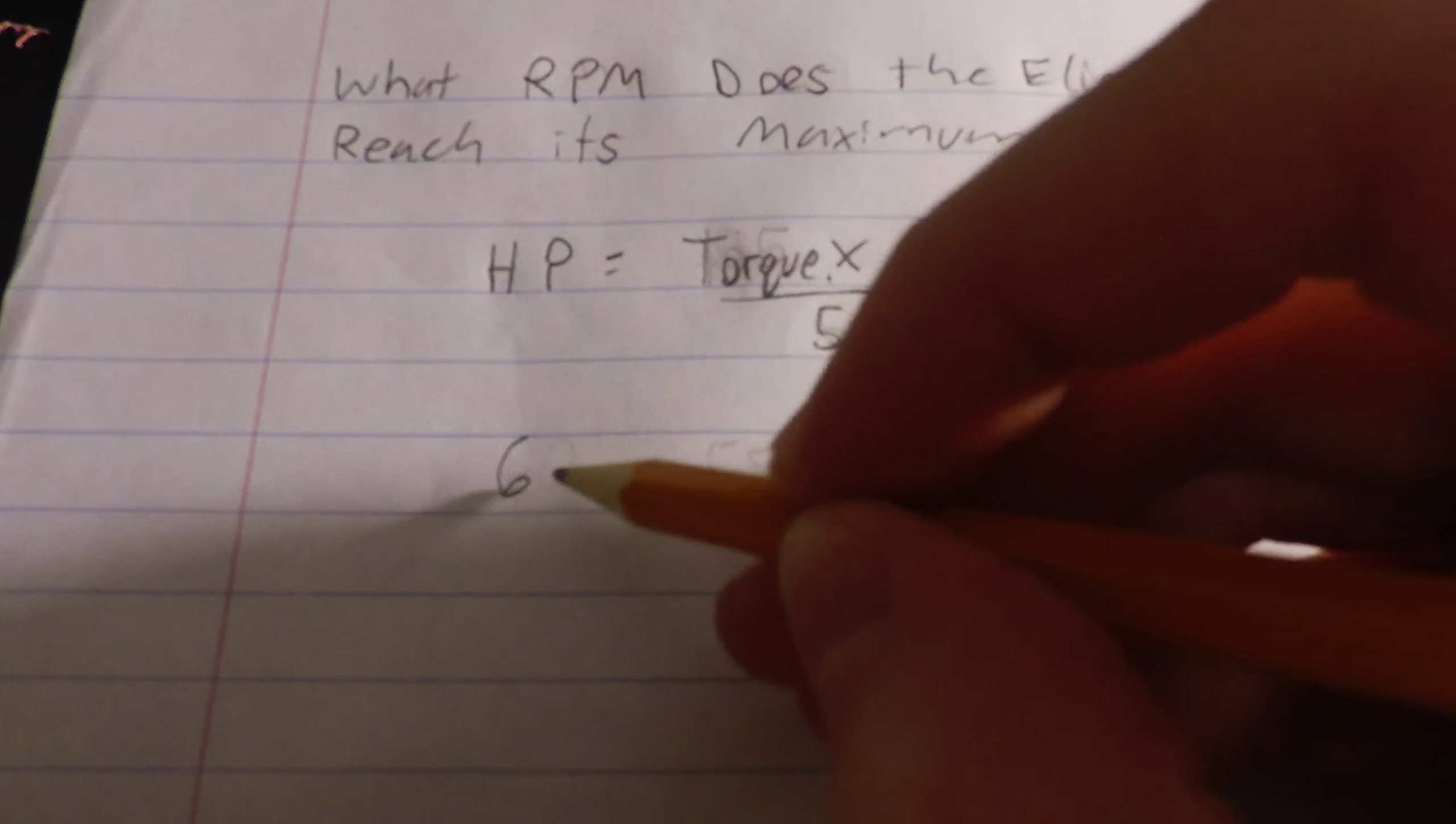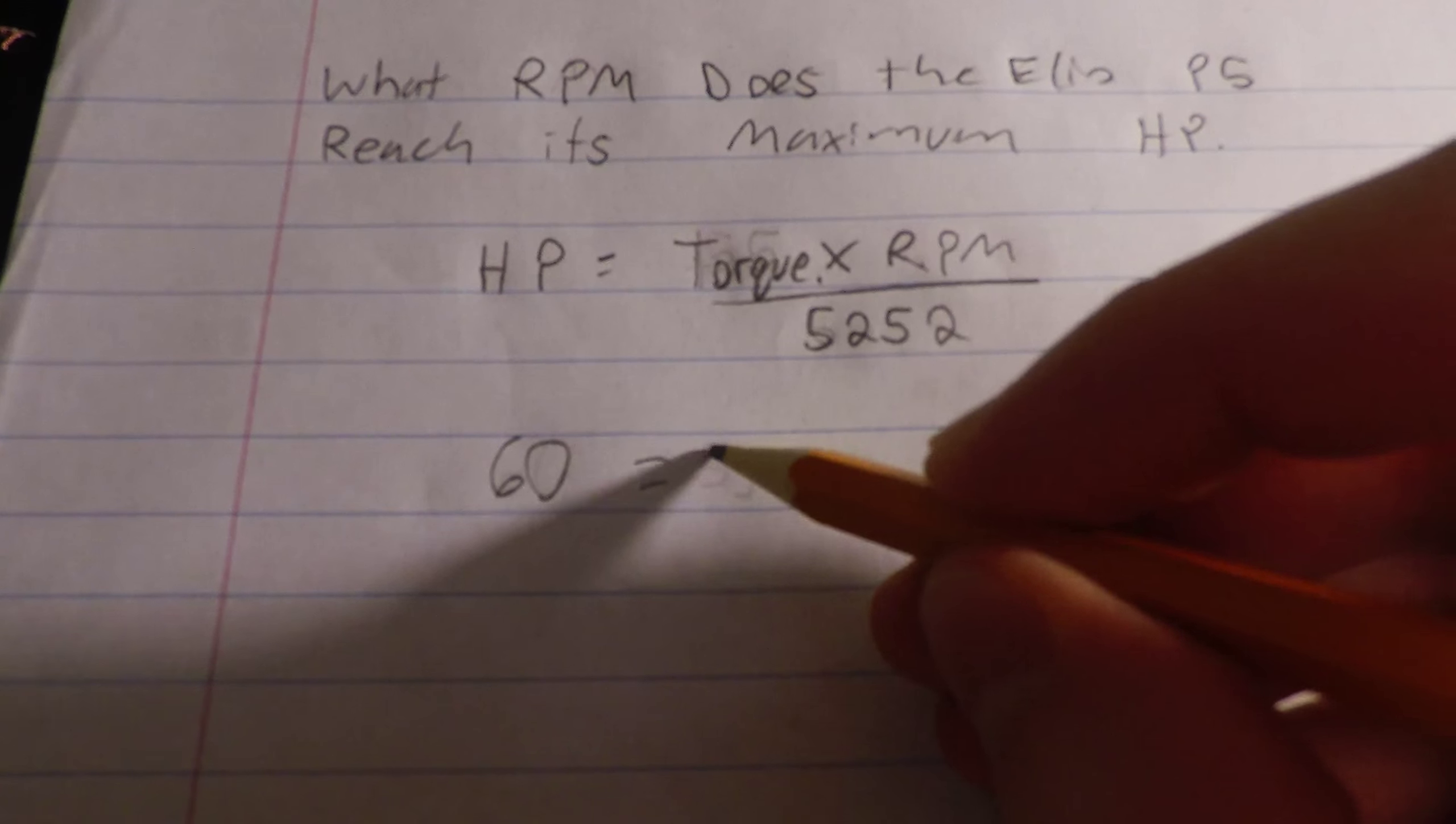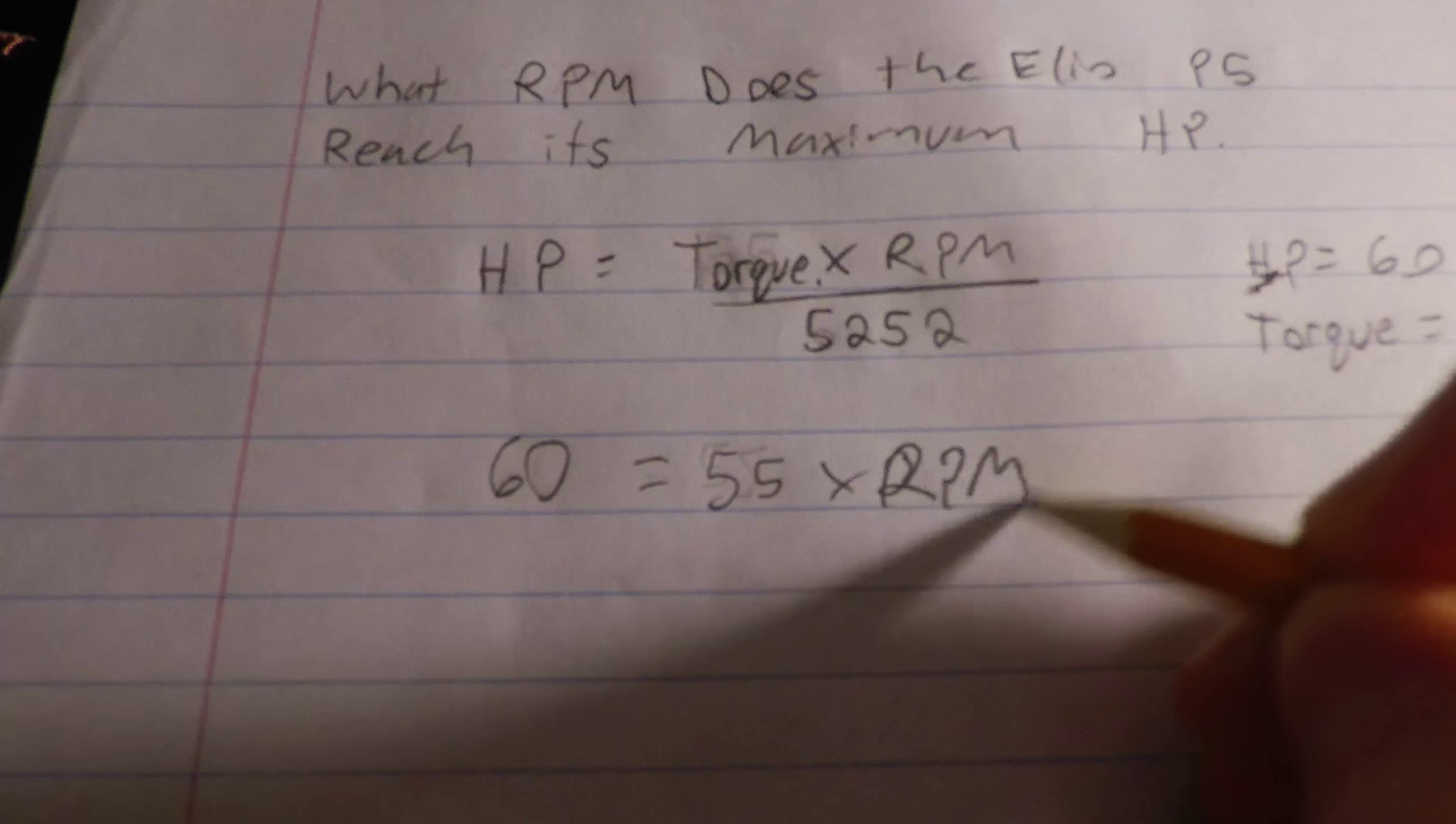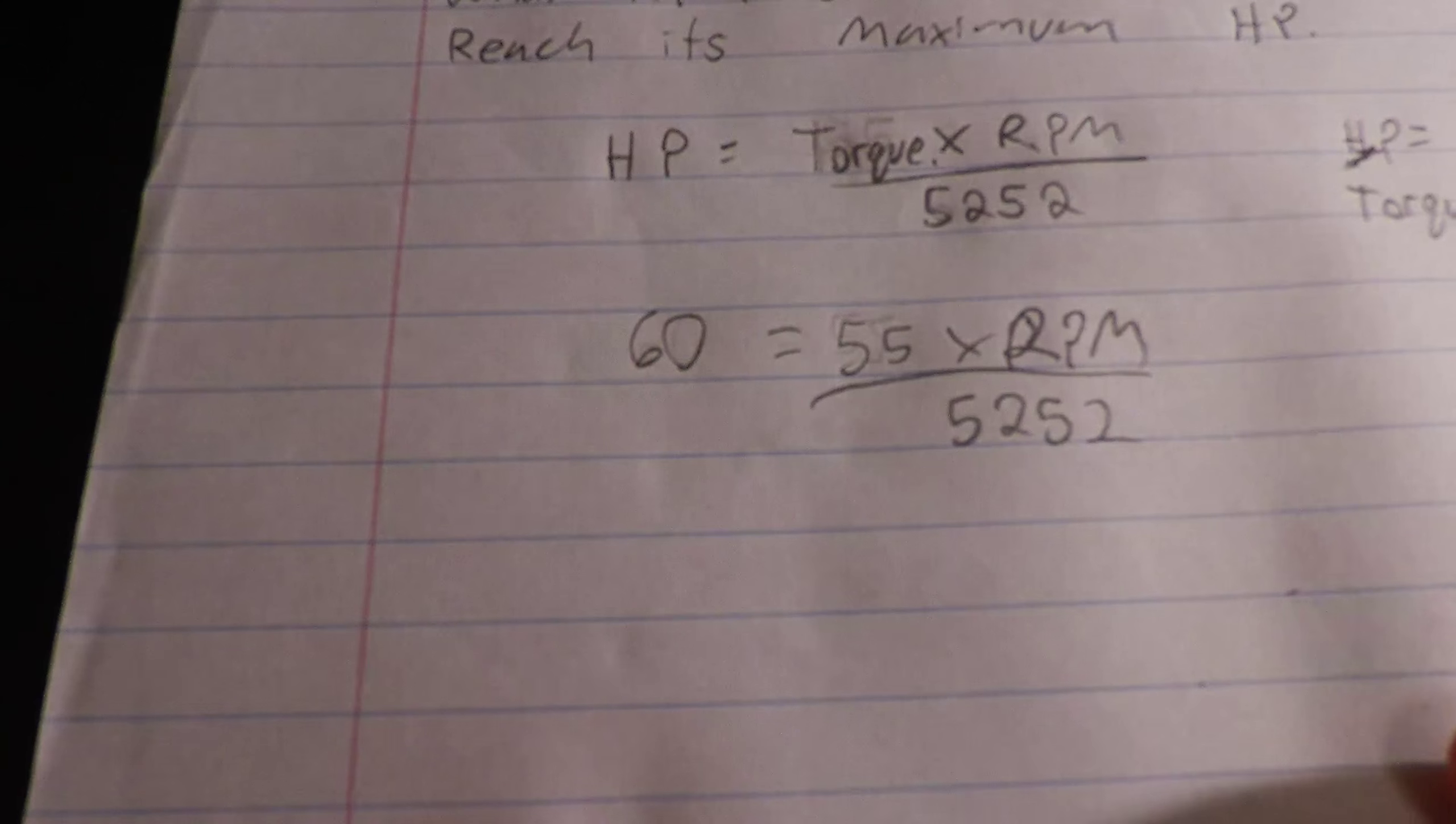First, we need to insert our known variables. As such here, then we need to cross-multiply.